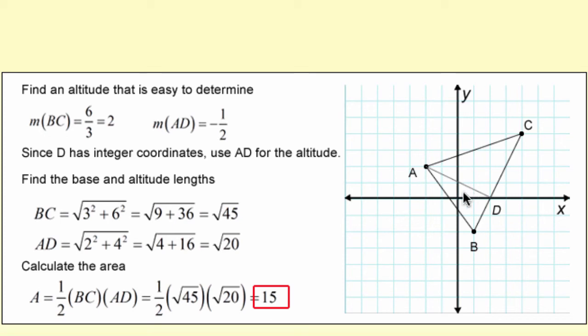So notice that both distances were left in radical form this time, and when you put them in the triangle area formula and multiply it all out you get an integer answer of 15.